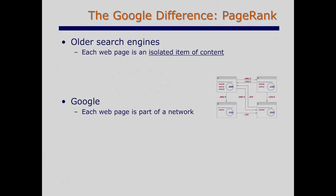Google's approach was different. It viewed each web page not as an isolated piece of content, but as part of this network — the World Wide Web. And so fundamentally, it's taking advantage of the network structure of the web in determining importance.